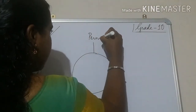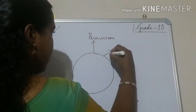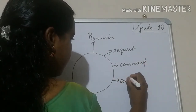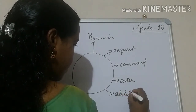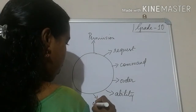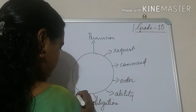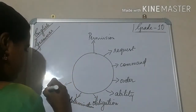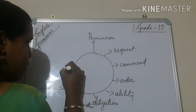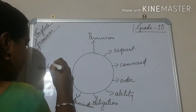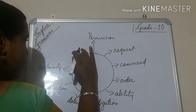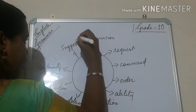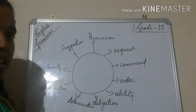So the first thing — when I want to make a permission, request, command, order, ability, obligation, determination, instruction, certainty, suggestion — when I want to make all these things, I will be using modals.